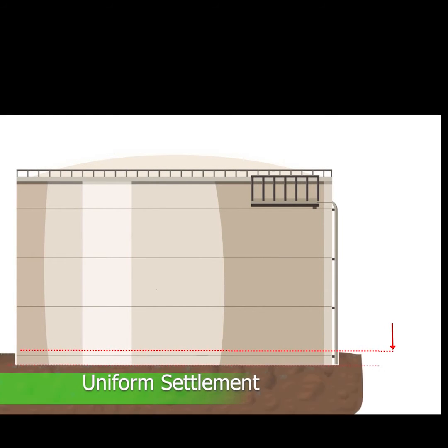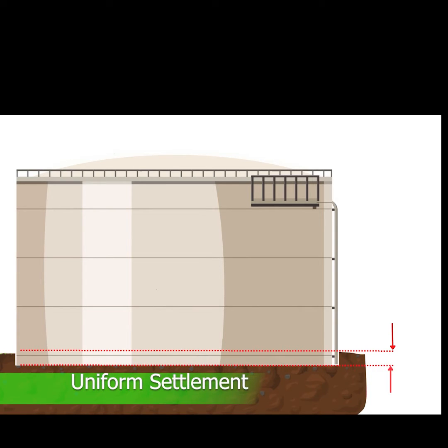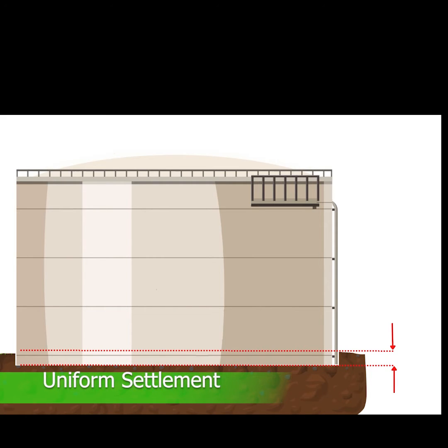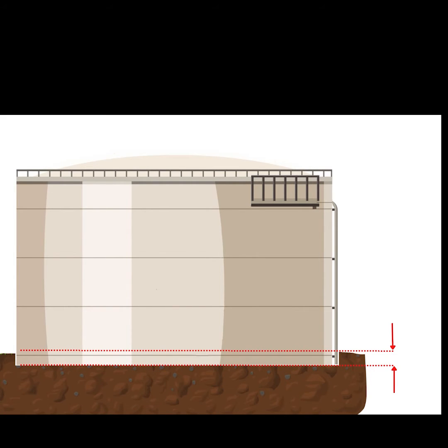Uniform settlement of a tank does not induce stresses in the tank structure. However, piping, tank nozzles and attachments must be given adequate consideration to prevent problems caused by such settlement.